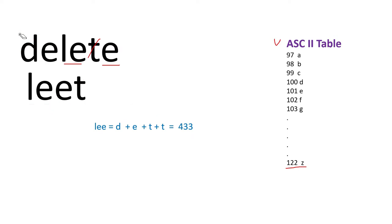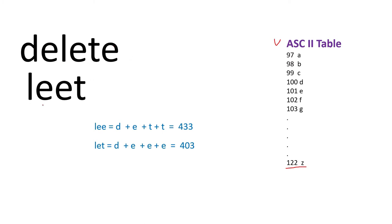Another choice is to make both strings 'late'. To do that, we delete 'D' from 'delete' and three 'E's total across both strings, giving a total ASCII value of 403. Yet another choice is to make them equal to 'eet'. For that, we delete 'D', 'L', 'E' from 'delete' and 'L' from 'leet', which gives a total ASCII value of 417.